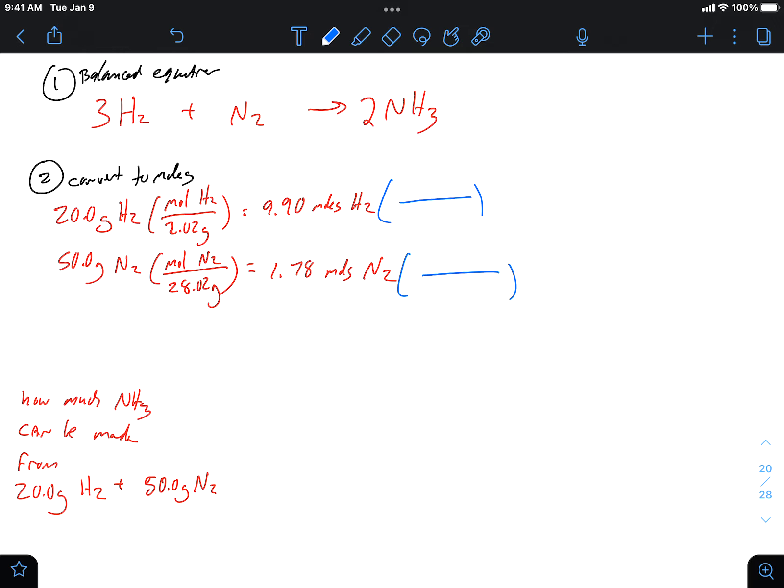Based on what you just learned, I need to cancel H2, I need to solve for NH3. So 2 moles of NH3 in the numerator, and what's the coefficient of hydrogen? Three. So 9.9 times 2 divided by 3. 6.6 moles of NH3.